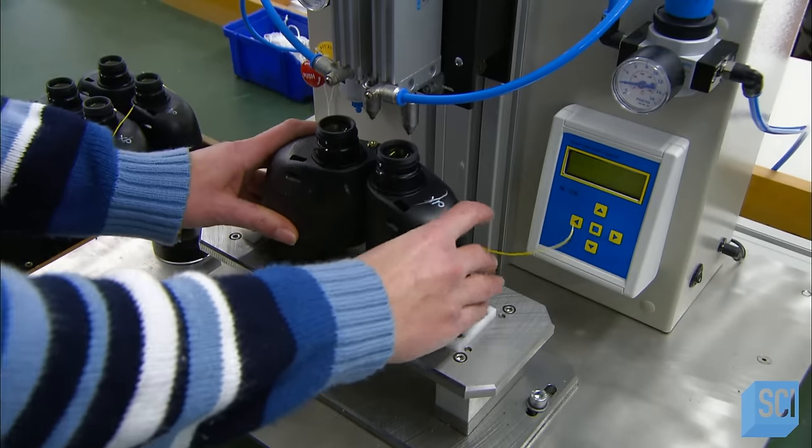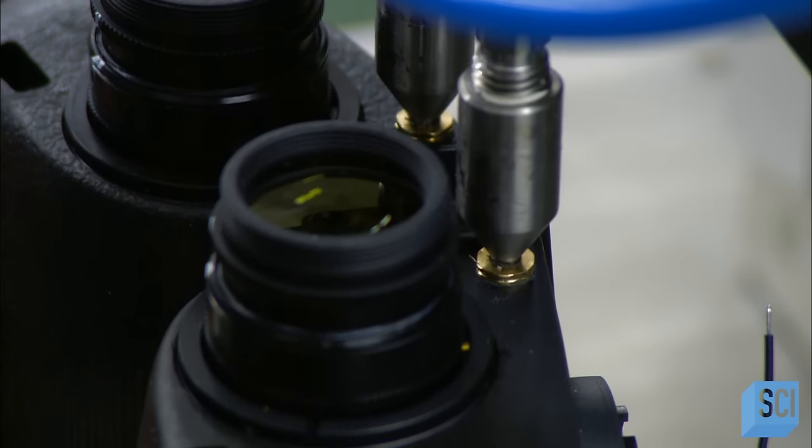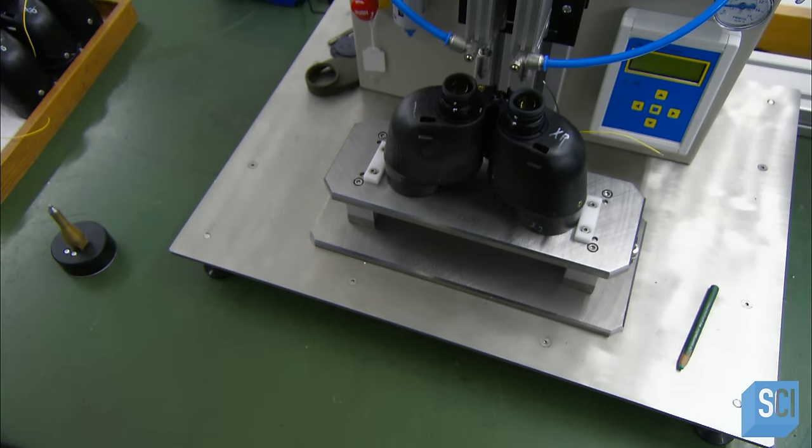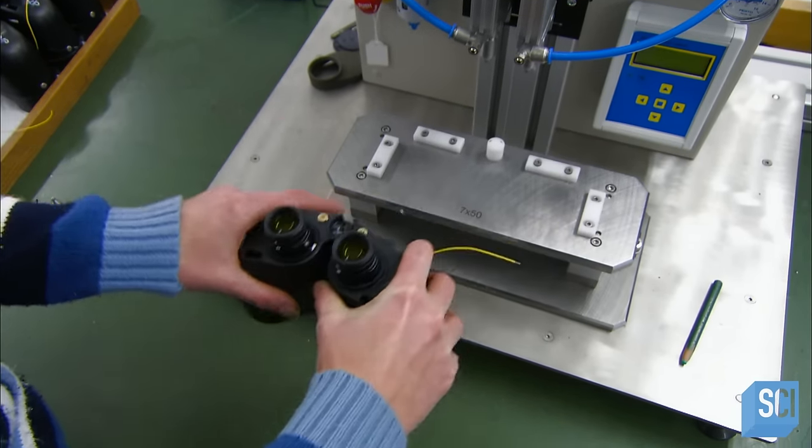Now, through a valve on each side, a machine sucks air from the housing and injects nitrogen gas. Nitrogen prevents the lenses from fogging up.